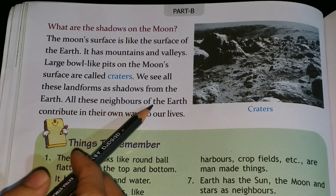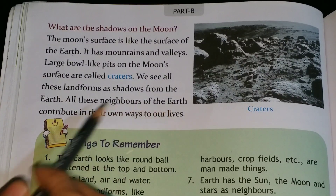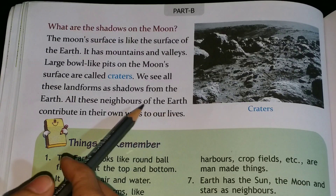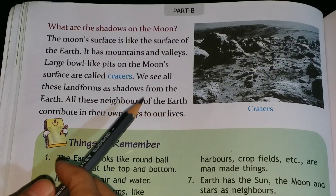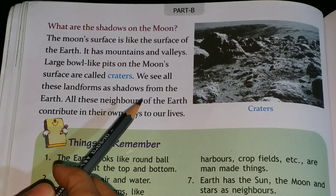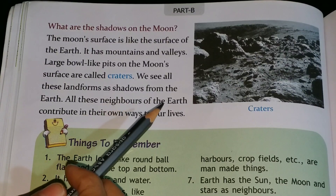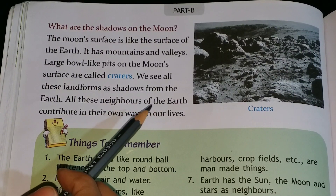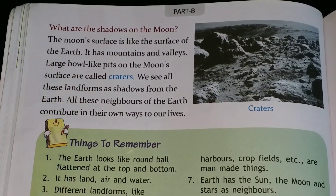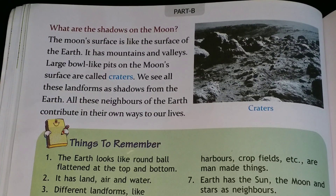All these neighbors of the Earth — the sun, the moon, and stars — contribute in their own ways to our lives. We live on the Earth. So children, here we finish lesson 14 of EVS. I hope you have understood the lesson nicely. Thank you.